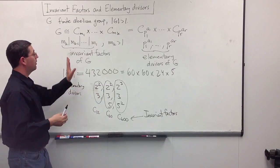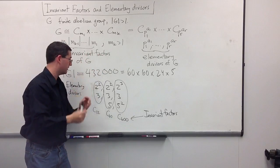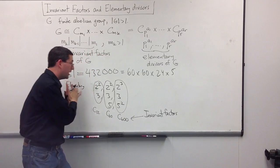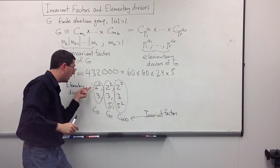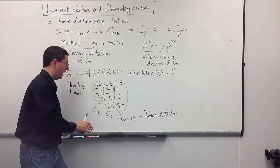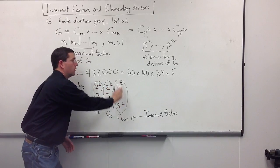Alright, so there is a very, very reasonable way to go between invariant factors and elementary divisors. Simply, either write down the elementary divisors, all the primes with the same prime in the same rows, and just always push everything to the right, and then circle vertically to get your invariant factors.